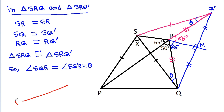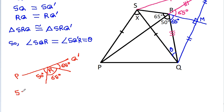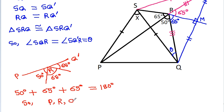Now if we look at P, R, Q': this angle is 50 degrees, this angle is 65 degrees, and this angle is 65 degrees. Since 50 plus 65 plus 65 equals 180 degrees, P, R, Q' are collinear.